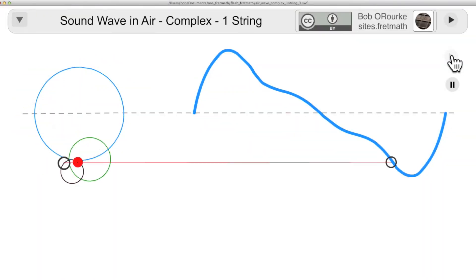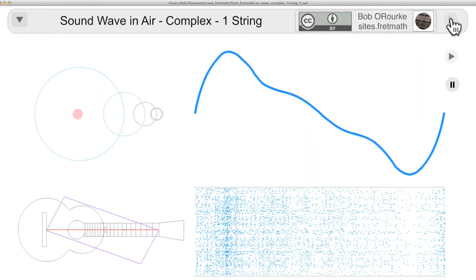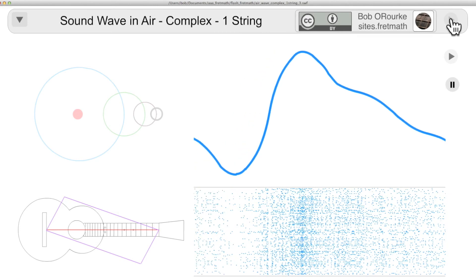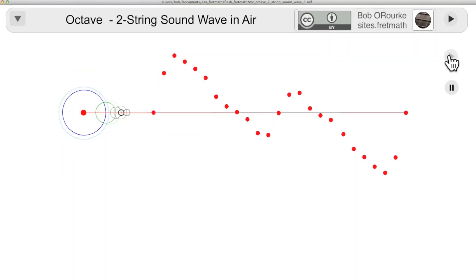You can also trace out the sound wave in air with this kind of image. You set the curve in motion, and down below you'll see the changes in the relative air pressure. To get multiple strings, just tie two sets of harmonic circles together.